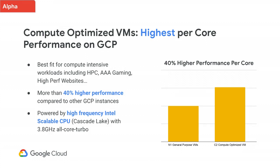This is why we've been working for a very long time on introducing the new compute-optimized VMs, which is one of the new instance types announced today during Next 2019. Compute-optimized VMs simply provide the highest per-core performance on GCP. They are the best fit for compute-intensive workloads including AAA gaming, high-performance computing, and high-performance websites and applications. These instances provide more than 40% higher performance for workloads that are compute-bound and care about single-threaded performance. They are powered by the new Intel second-generation Scalable processors, codenamed Cascade Lake, and offer up to 3.8 GHz in all-core turbo.